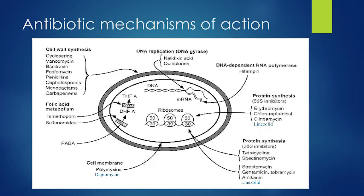You can get a visual representation of the different antibiotics and where they work. For example, many antibiotics target cell wall synthesis — your beta-lactams like penicillins and cephalosporins. Trimethoprim targets folic acid metabolism. Tetracyclines and fluoroquinolones work more inside the cell.